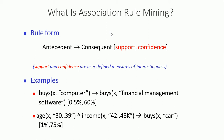Support is a generic measure used to define the interestingness of customer behavior. For example, support for why customer X buys financial management software is 0.5%, with 60% confidence. These metrics — support and confidence — help characterize the strength of an association rule.